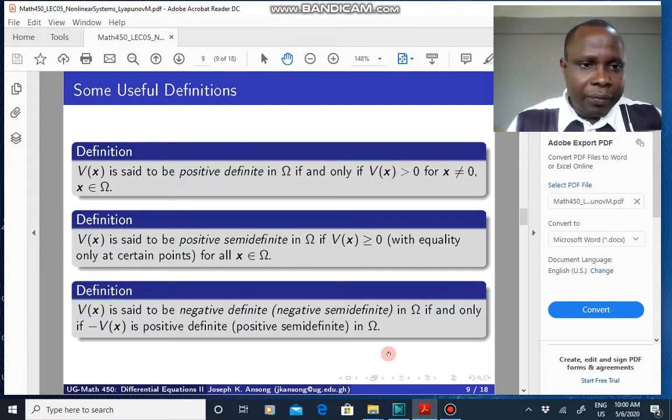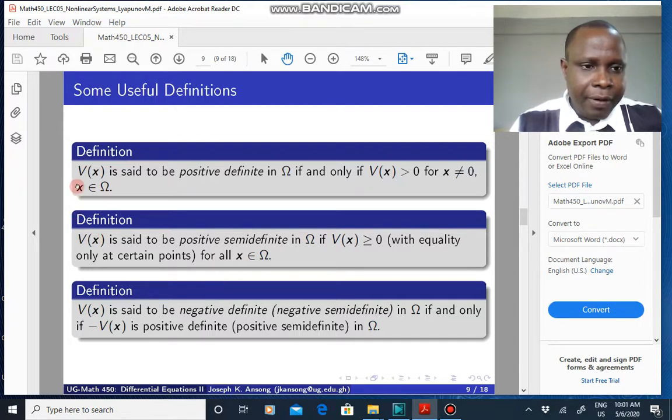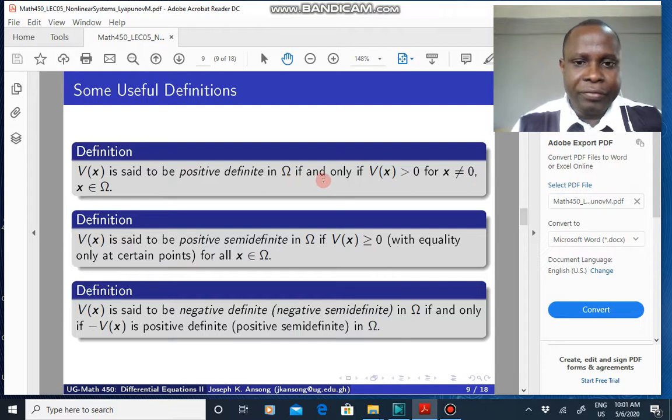Now, these are some useful definitions that we'll use later on. And you will probably come across some of them later, in some places. Where V here is said to be positive definite in a domain omega if and only if V of x is positive away from the origin. If x is not zero and V is strictly positive, you say it's positive definite.